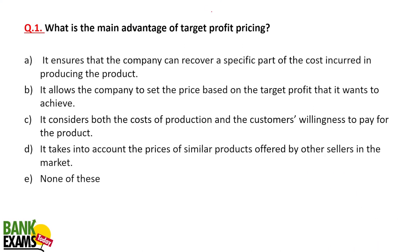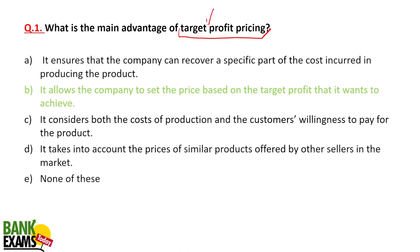What is the main advantage of target profit pricing? Target profit pricing is when you set a target profit and then set prices based upon achieving that target. So let's say your target profit for a month is 1,00,000 rupees — it allows the company to set prices based upon that target profit.